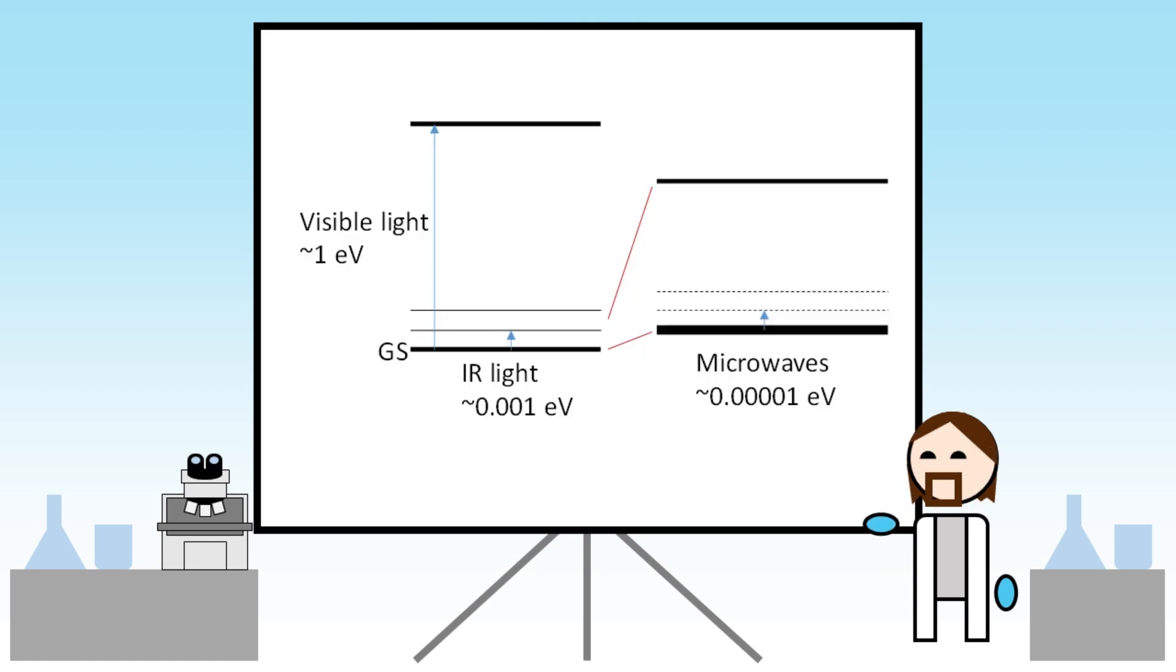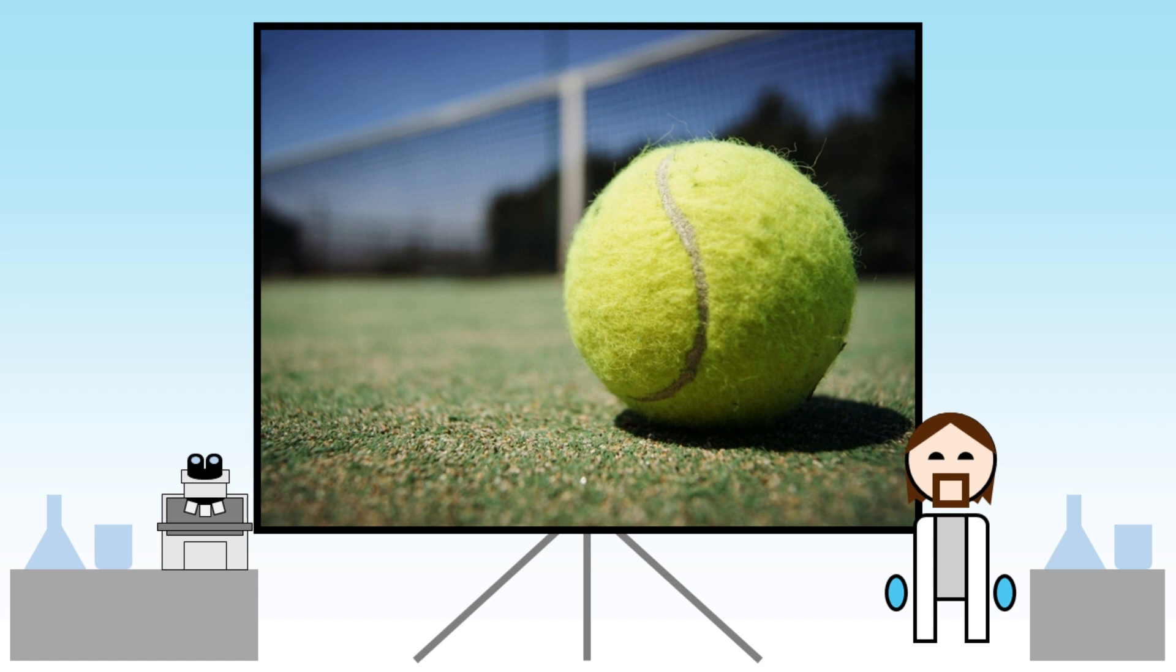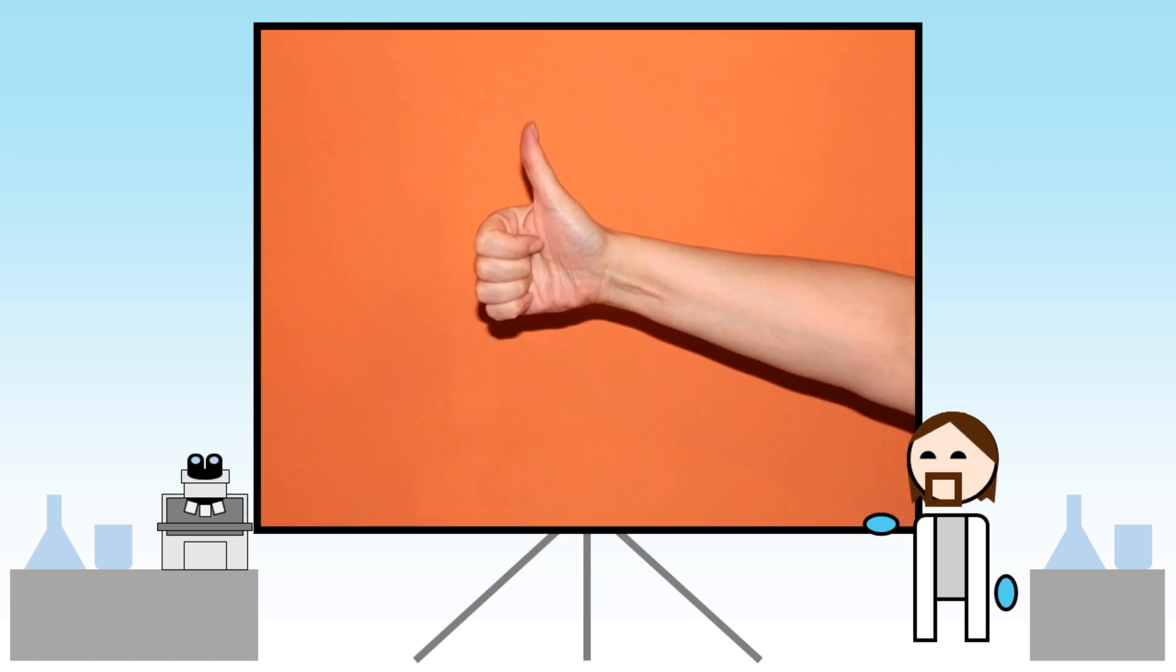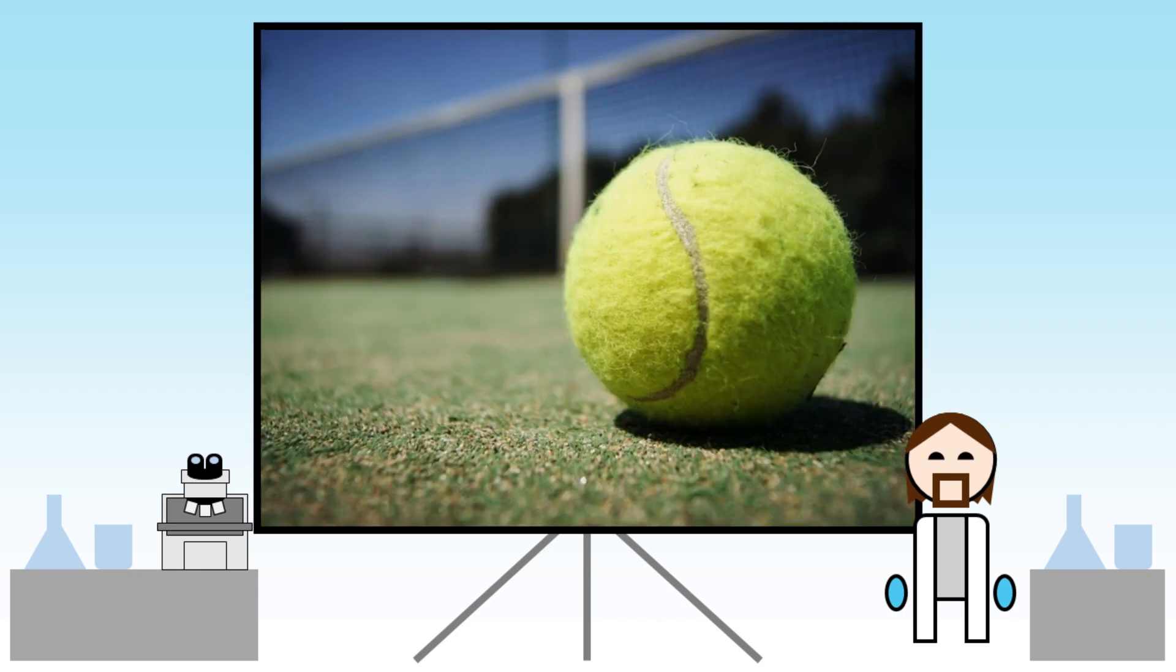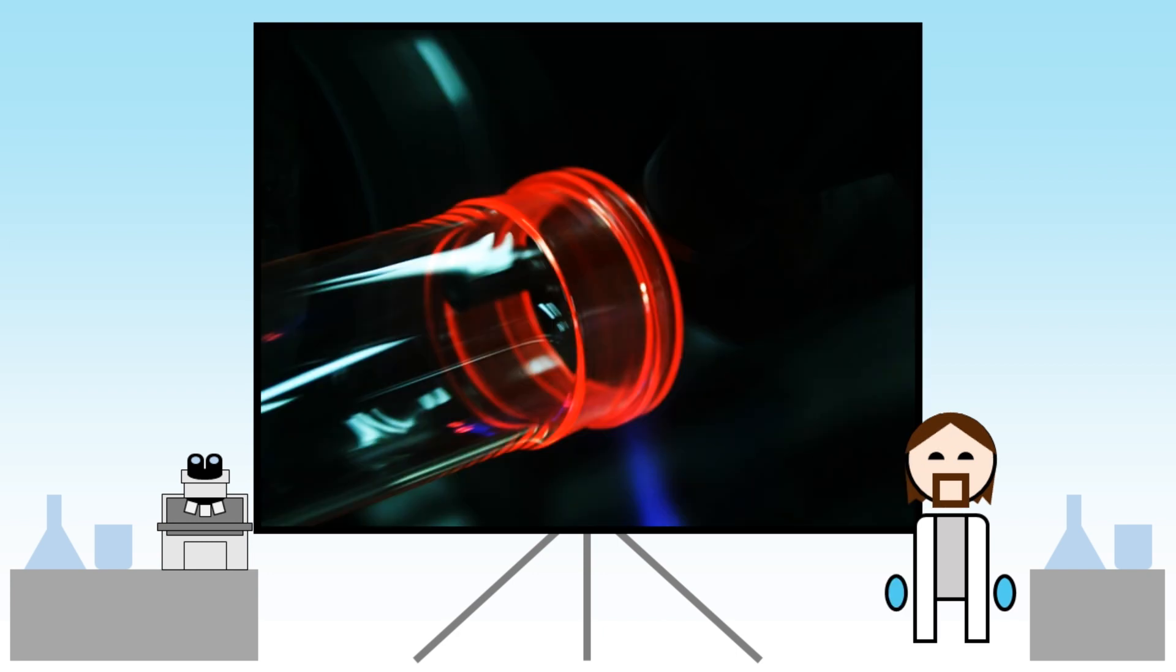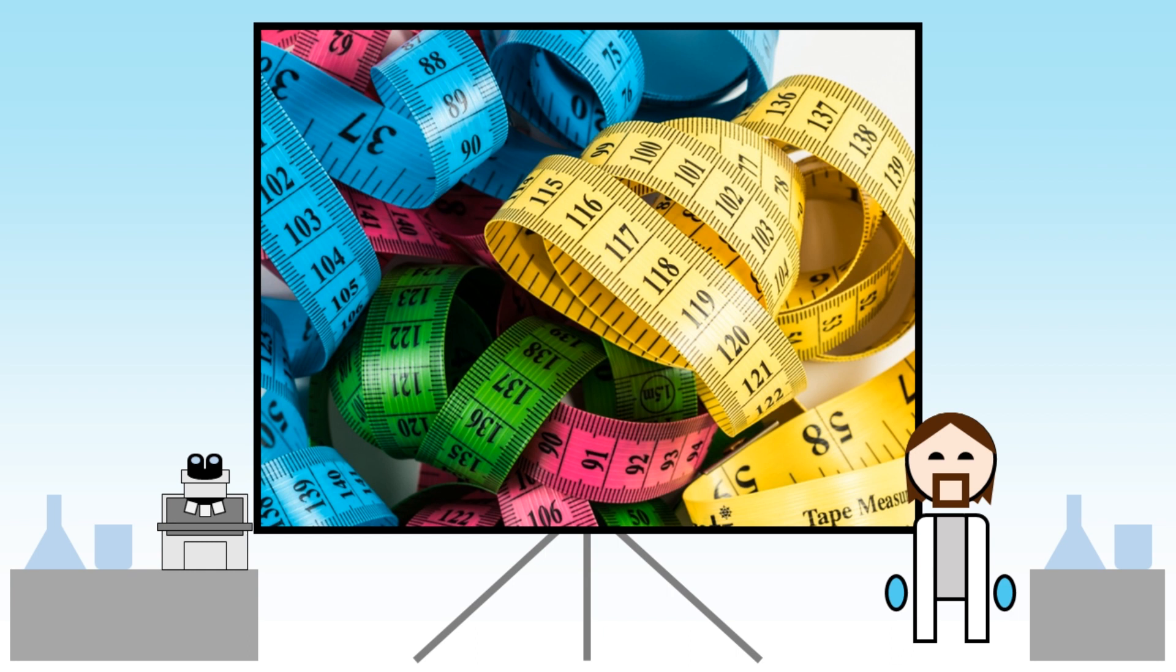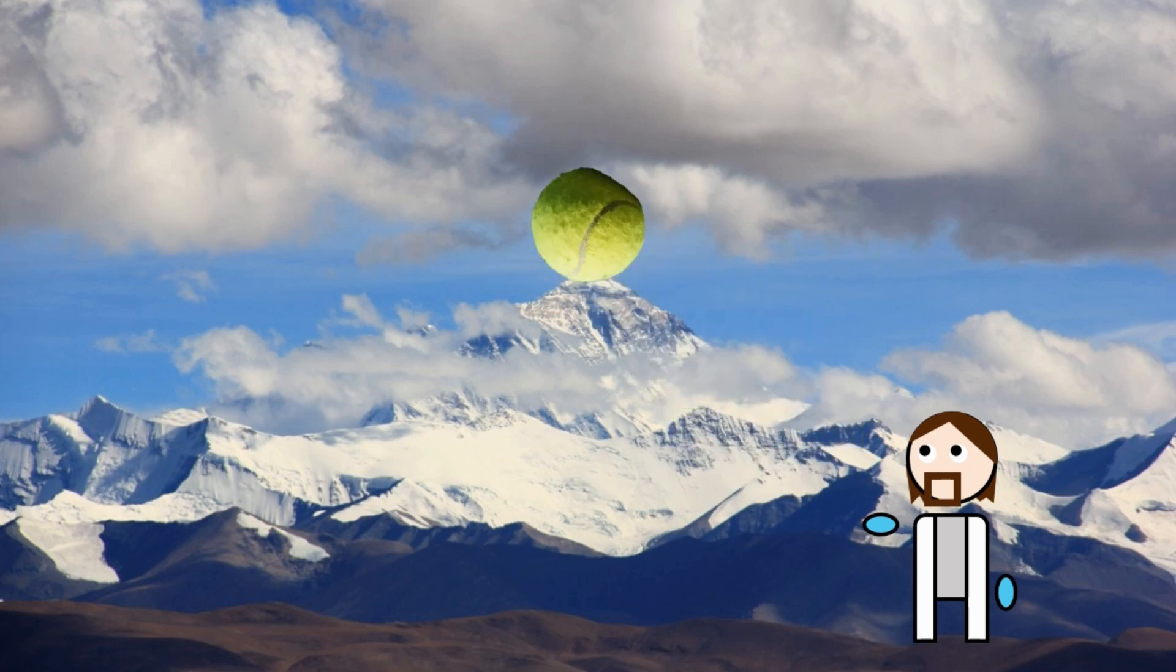Now let's put those energy scales in perspective. Think about how much effort it takes to throw a ball up by 10 centimeters. That's a microwave excitation of a rotational state. Then, if you throw that same ball up to the roof of your house, about 10 meters, that's an infrared excitation of a vibrational state. On this same energy scale, an electronic excitation is like throwing that same ball 10 kilometers up into the atmosphere and over the top of Mount Everest.